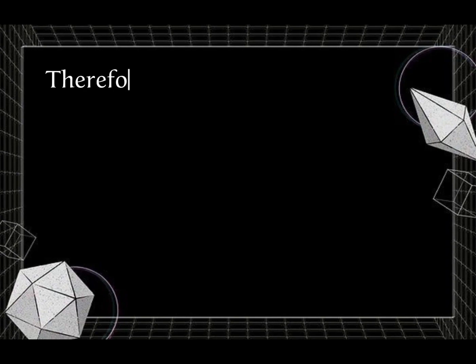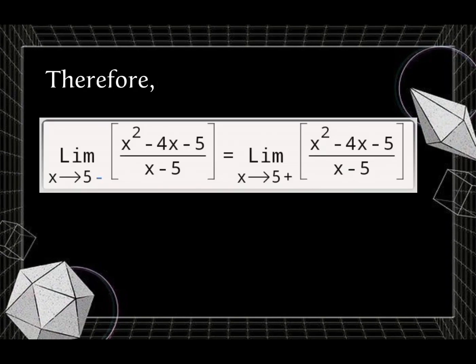Therefore, the limit of (x squared minus 4x minus 5) over (x minus 5) as x approaches 5 from the left and from the right are equal, both equal to 6.